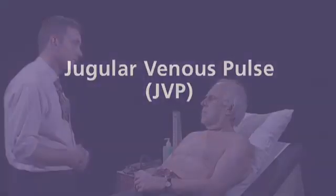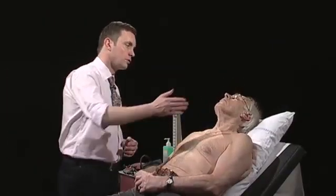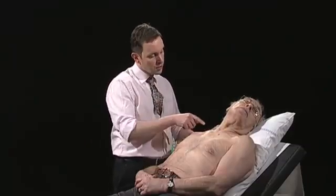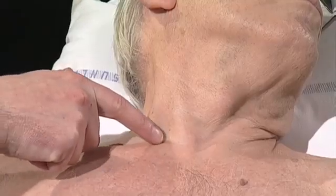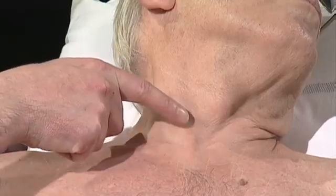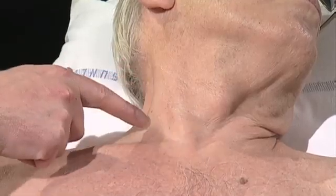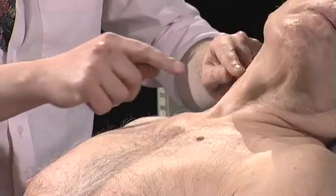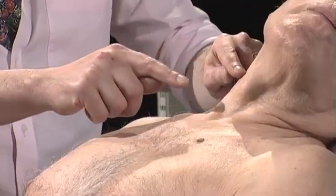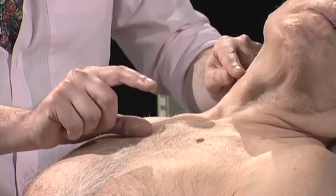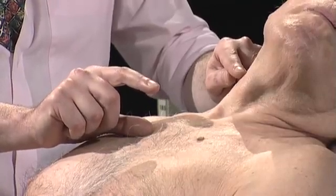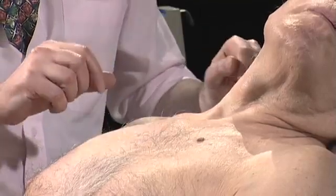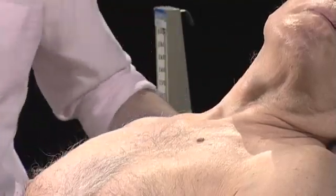I'd like to examine the vein in your neck please. Can you rest your head back and look to the left. The internal jugular vein arises between the two heads of the sternocleidomastoid — the medial and the lateral heads. If the JVP is elevated then it can be measured as the vertical height from the sternal angle; it's normally equal to or less than three centimetres. Eliciting the hepatojugular reflux is normally unnecessary.